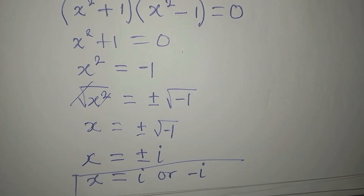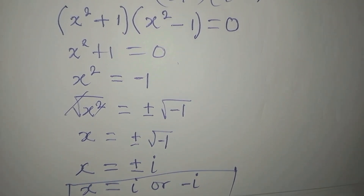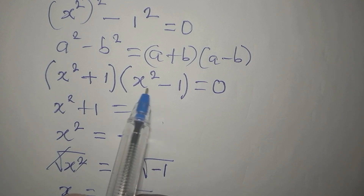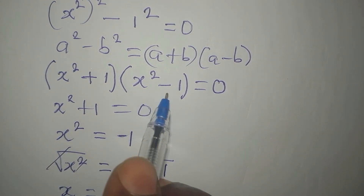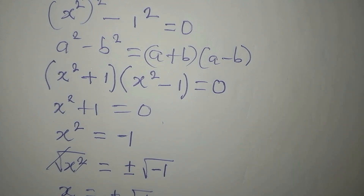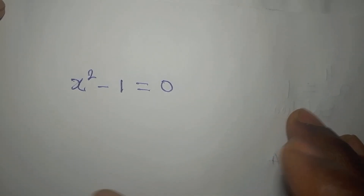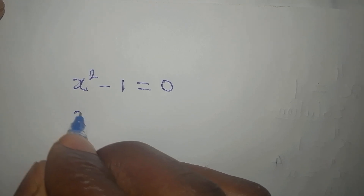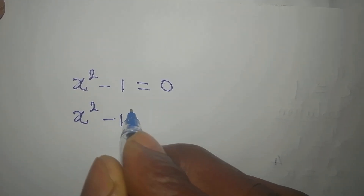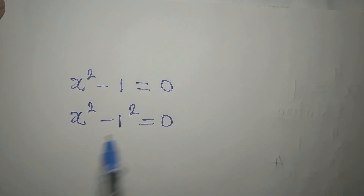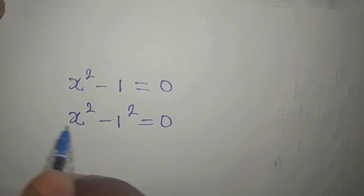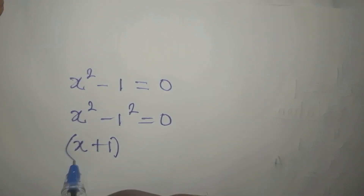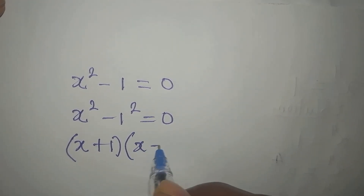We now have two solutions but we haven't used the second factor yet. We go back to that factor and equate it to zero: x squared minus 1 equals zero. We can apply the difference of two squares again — writing it as x squared minus 1 squared equals zero — so that gives us the factors x plus 1 and x minus 1.